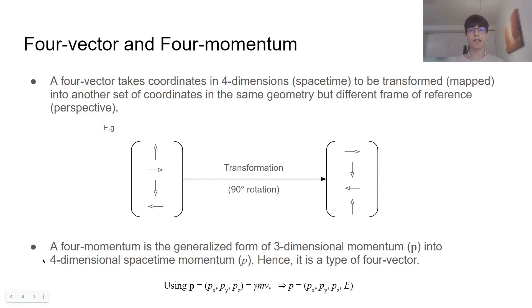A more specific application of four-vector is four-momentum. It is the generalized form of three-dimensional momentum into four-dimensional space-time momentum. Hence, it's a type of four-vector. What it does is you get the classical mass times velocity interpretation of momentum and multiply it by a factor, the Lorentz factor, which allows for relativity to come into play as the object's velocity approaches the speed of light. And then what we have is the partition of our four-momentum into the three-dimensional spaces x, y, and z, and the energy of the particle.